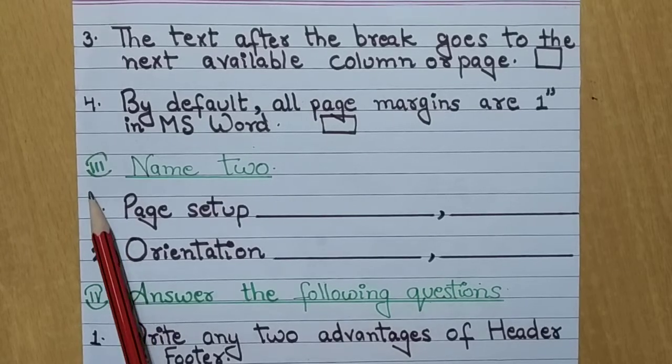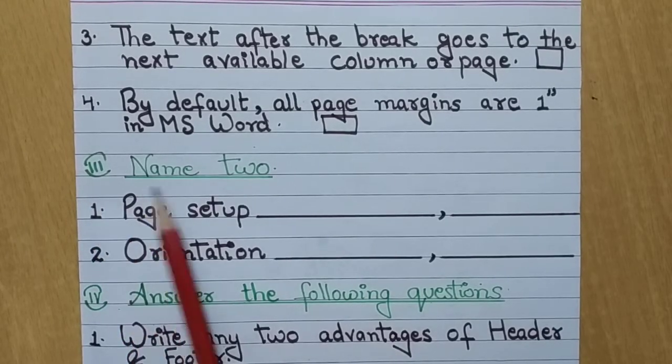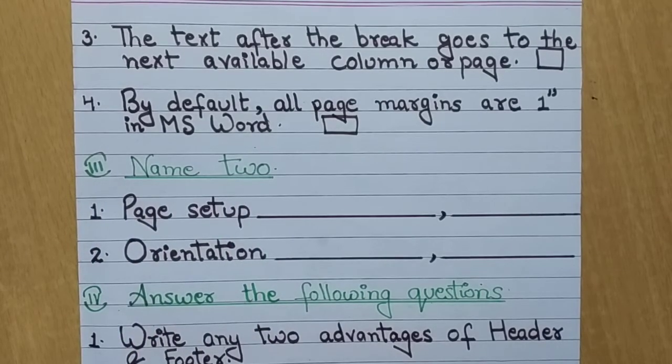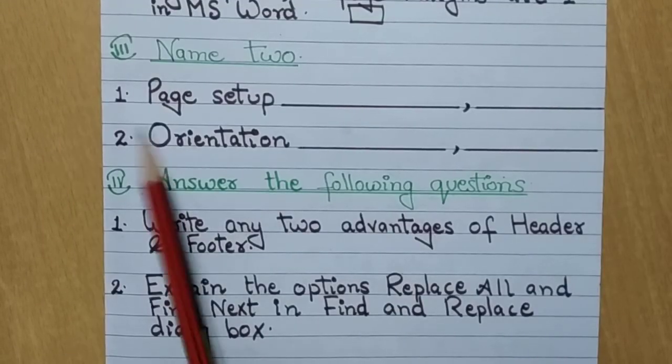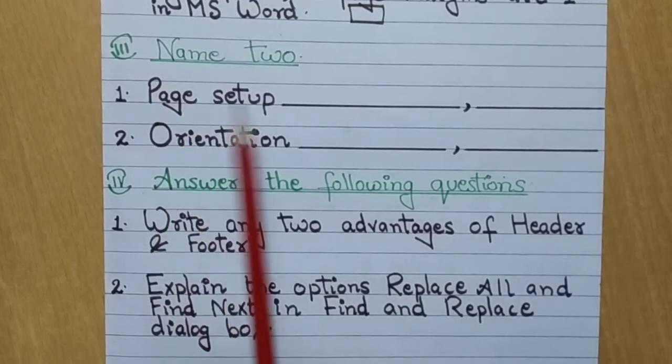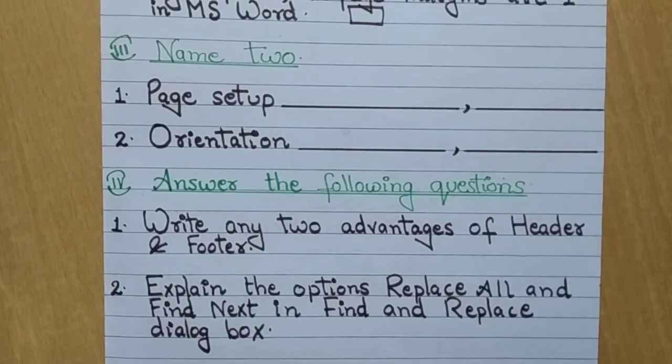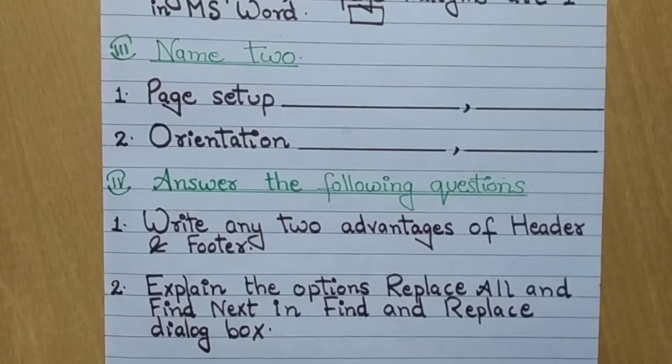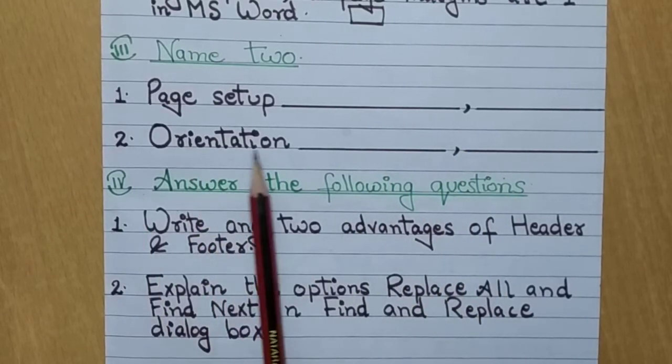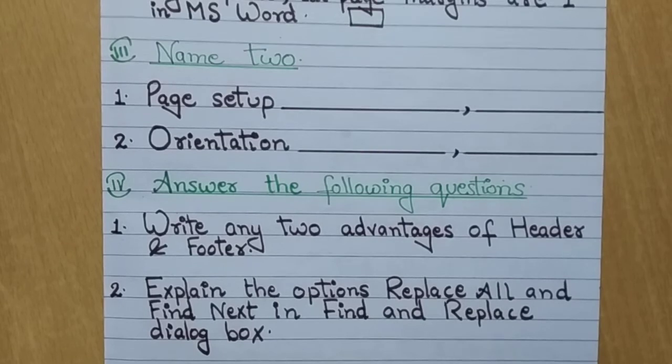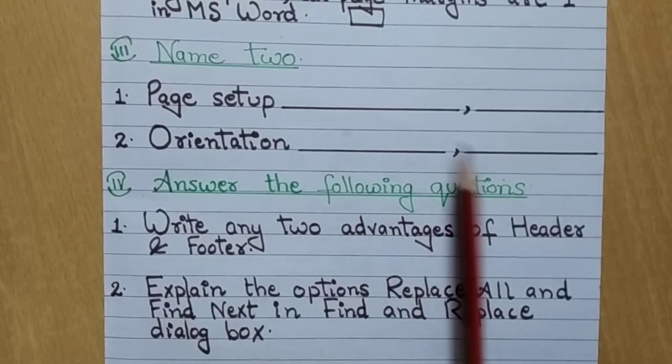Next, let's move on to the name two. Is mein aapko koi bhi two names likhna hai. First one in this is page setup - page setup ki kaun-kaun se options hain, bahut saare options aap ne learn kiye hain, you will write only two here. Second it is orientation, two types of orientation you have to mention it here.